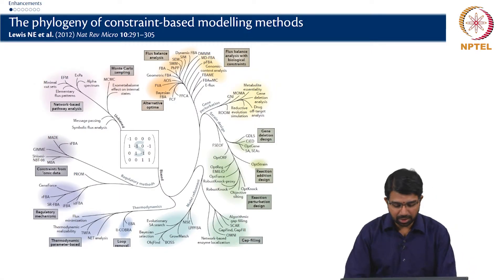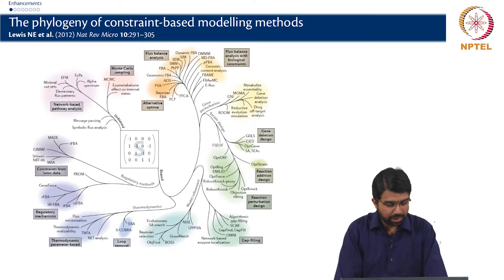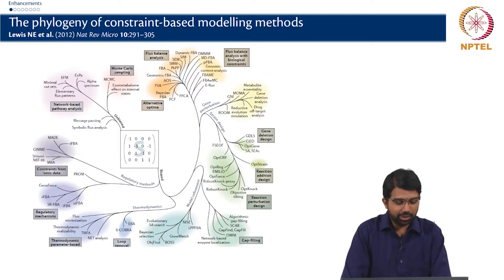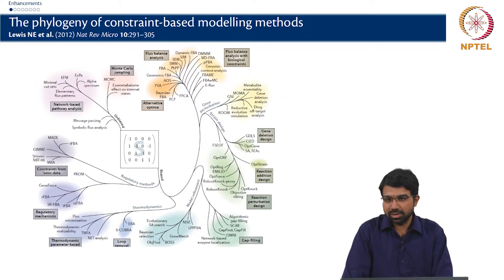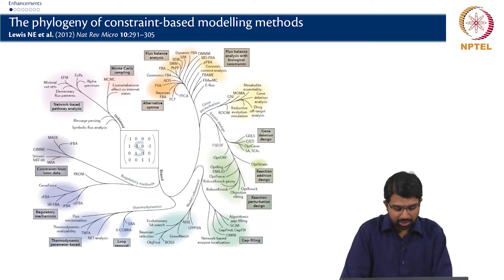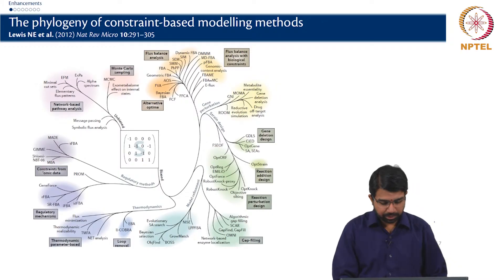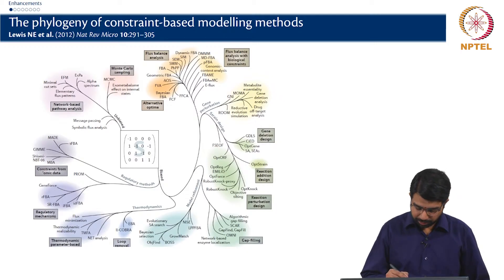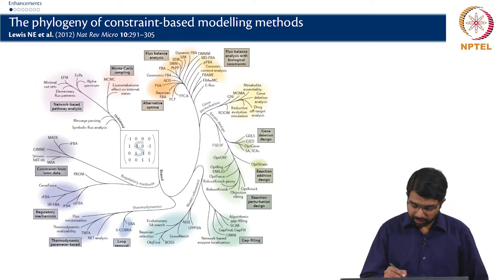This is a nice picture from one of the reviews from Paulson's group. The diagram is essentially a phylogenetic tree — a tree of life — but instead of organisms, all the nodes are methodologies. So there are many different flux-based methodologies developed in the last 10-15 years: Bayesian FBA, flux variability analysis, geometric FBA, parsimonious FBA, E-flux (something we will talk about today), dynamic FBA, and so on.